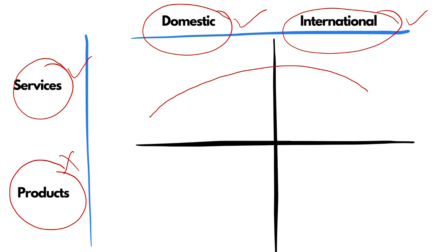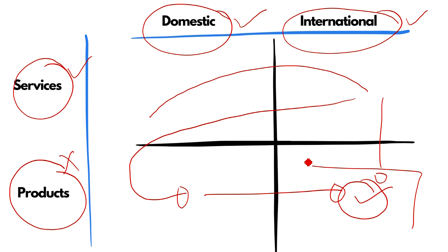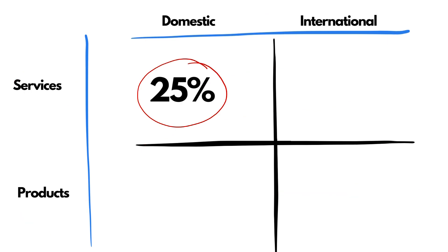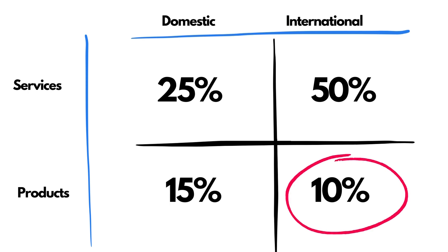The path founders often follow starts with domestic services, then moves to international services. Sometimes, if lucky, they take that international work and turn it into a product — first domestically, then internationally. The luckiest make it to international product, which is the Holy Grail because it is the most profitable segment. About 25% of Pakistan's tech companies do domestic services, 50% do international services, 15% graduate to domestic product, and only 10% reach international product.